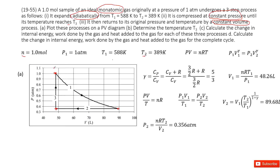P1 is one atm. But what is the volume? Since this is an ideal gas, PV equals nRT. So V1 equals nRT1 divided by P1. In this function, n is given, R is a constant, T1 is given, P1 is given. So you can get V1 around 50 liters.